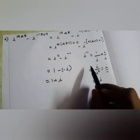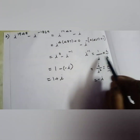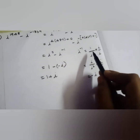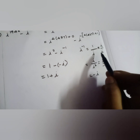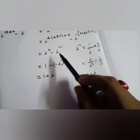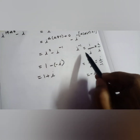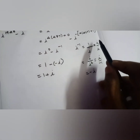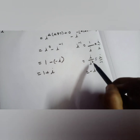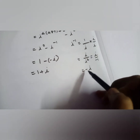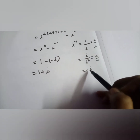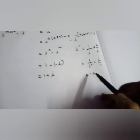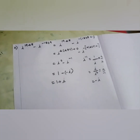This conversion is very important: i power minus 1 is written as 1 by i; multiplying and dividing by i gives i by i squared; i squared is minus 1, so finally we get minus i.